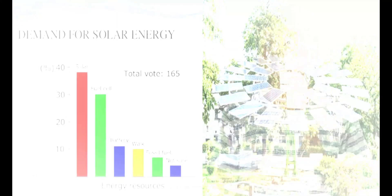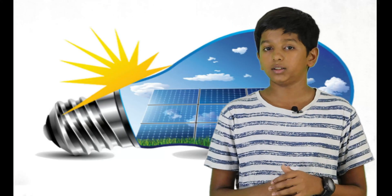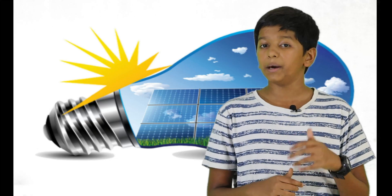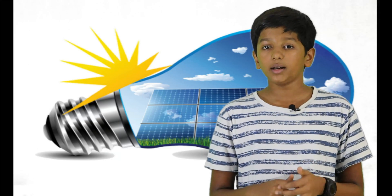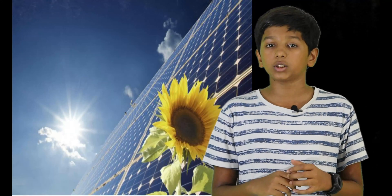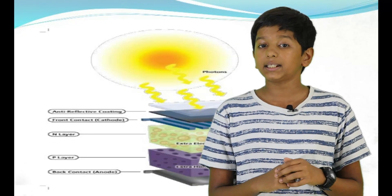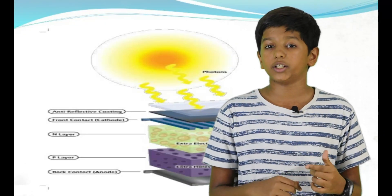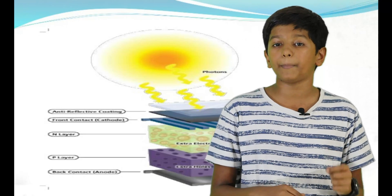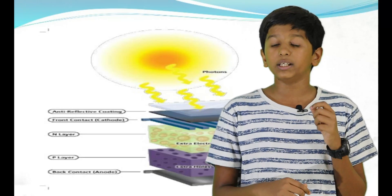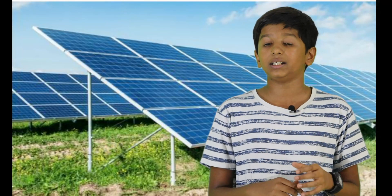Now let's cover the benefits of solar trees. Solar trees are flexible and rotate to face the sun, like a sunflower, producing the maximum possible amount of energy. They use a technique called spiraling phyllotaxy, whose calculated rotations allow even the lowest solar panels to receive sunlight for electricity production.